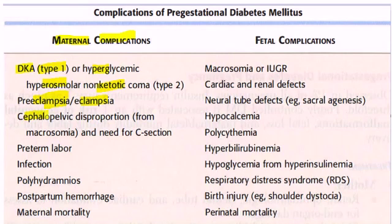Fetopelvic disproportion, which occurs because of macrosomia and often requires caesarean section. Pre-term labor can lead to infection, polyhydramnios, postpartum hemorrhage, and maternal mortality.